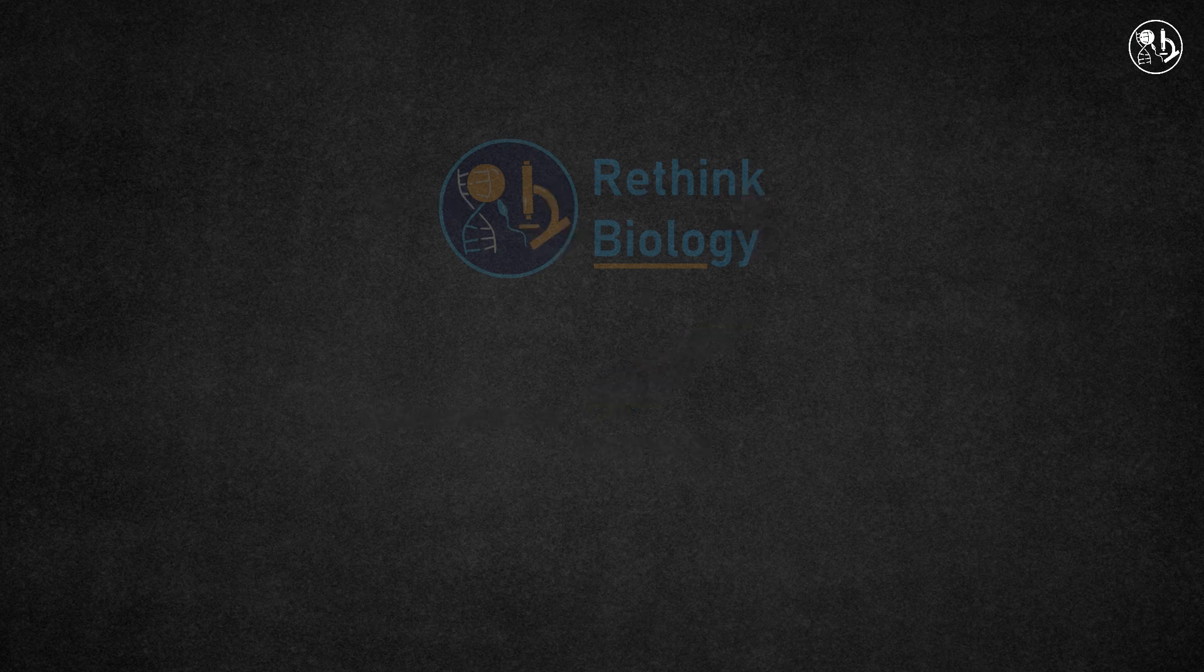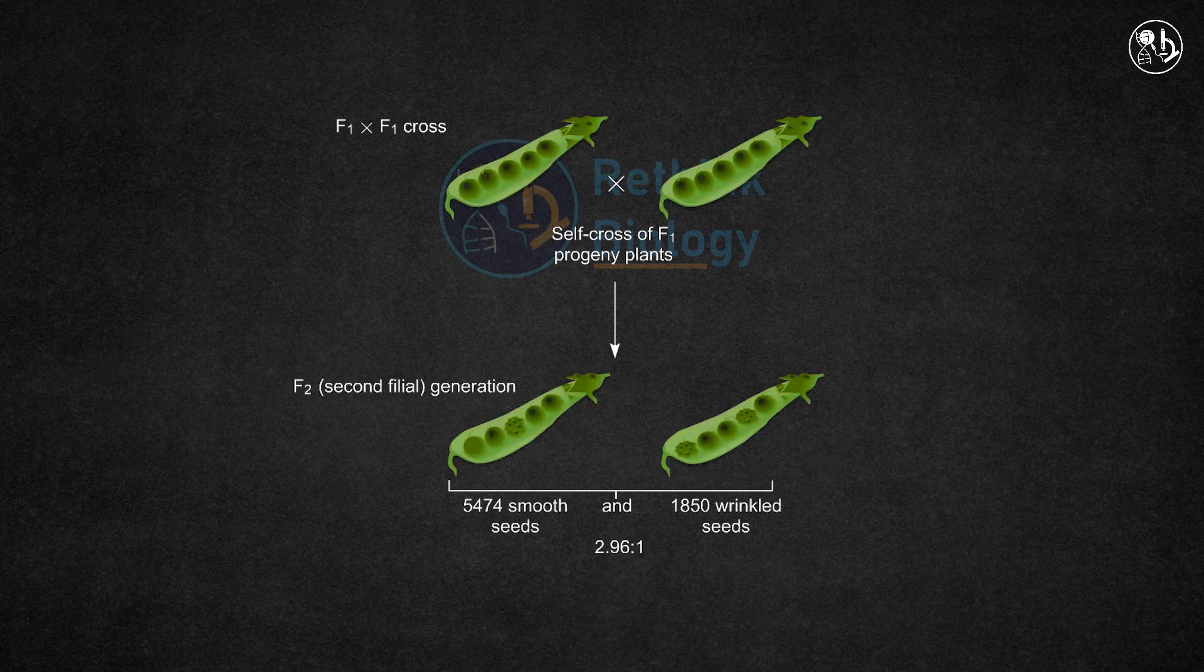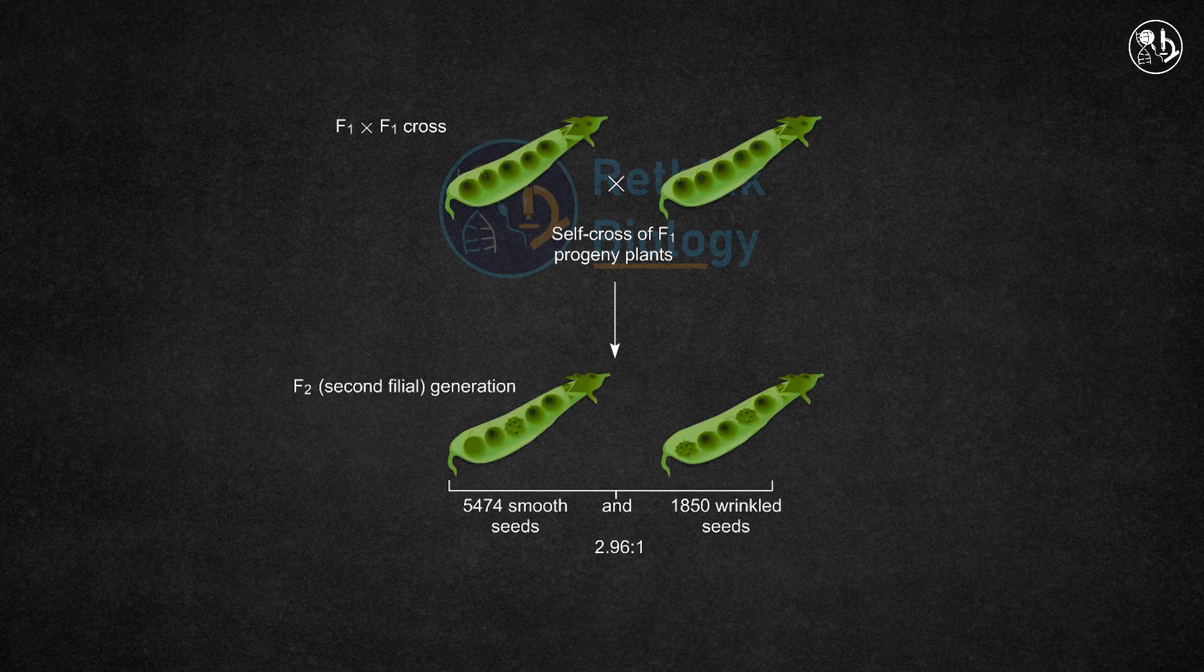When the F1 generation was self-crossed, the resulting F2 generation showed a ratio of three smooth seeds to one wrinkled seed. The traits were either smooth or wrinkled and nothing in between.